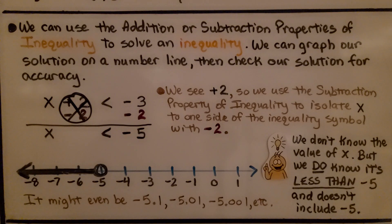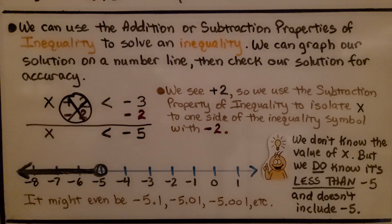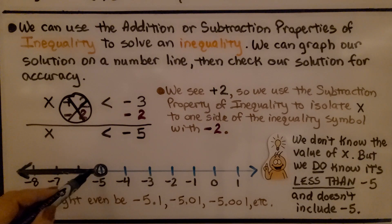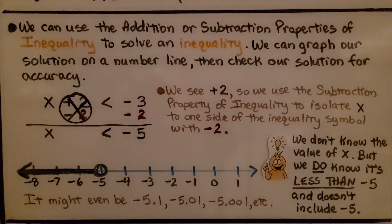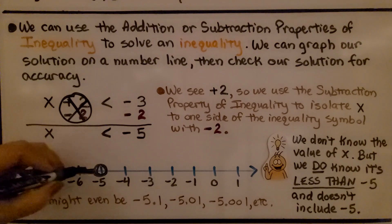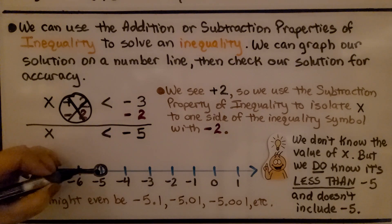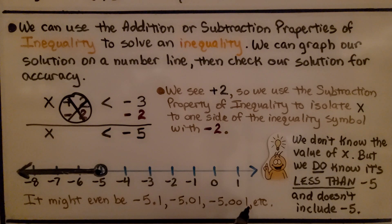We don't know the exact value of x, but we know it's less than negative 5 and doesn't include negative 5 — there's no 'or equal to.' So we use an open circle for 'not included,' and our arrow points to the left since it's less than negative 5. It could be negative 5 and one-tenth, negative 5 and one-hundredth, or negative 5 and one-thousandth — any of those are still less than negative 5.